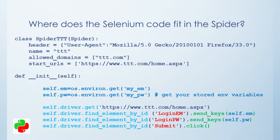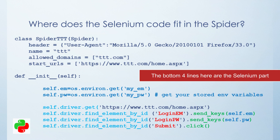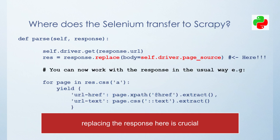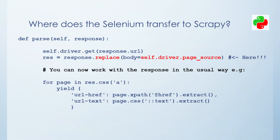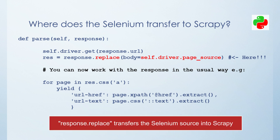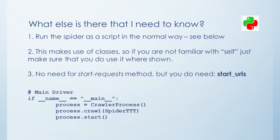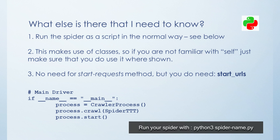Here we have in red those are the IDs of the input boxes, and then you've got 'submit' which is the name of the submit button in the HTML. Here we are transferring the page source from Selenium into Scrapy with `.replace` — that's the line that transfers it.